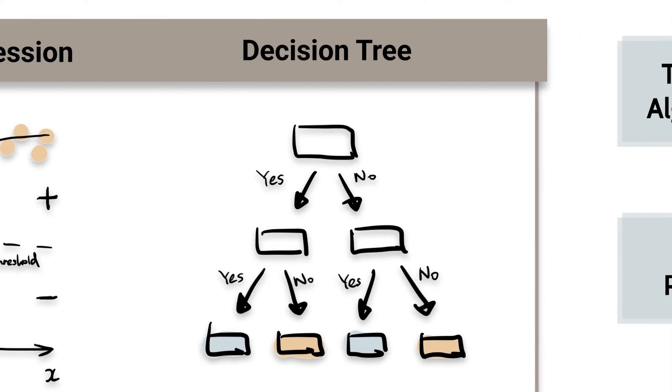Decision tree builds tree branches in a hierarchy approach and each branch can be considered as an if-else statement. The branches develop by partitioning the dataset into subsets based on most important features. Final classification happens at the leaves of the decision tree.